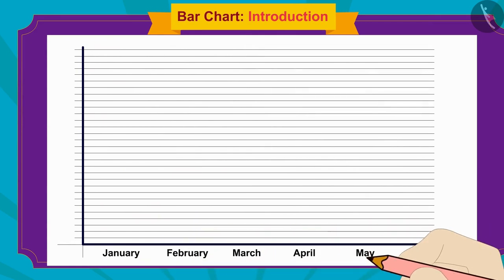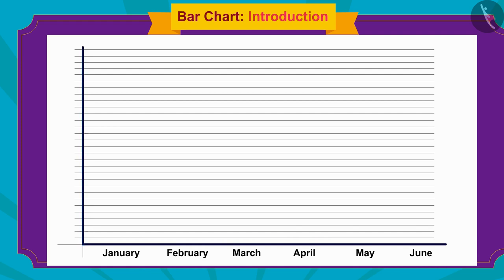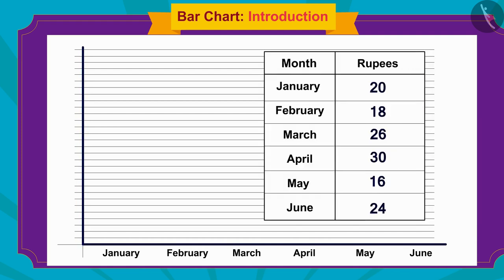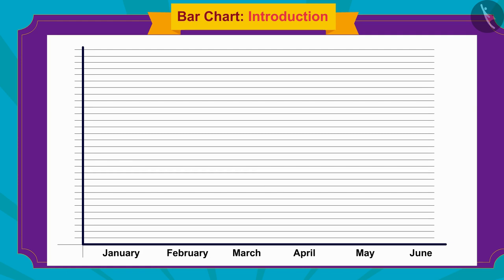Then he wrote the names of the six months on the horizontal line. In order to determine the interval between the numbers on the vertical line — the scale of the chart — he found the largest number in Bunny's table, which was 30. So he wrote down the numbers from 1 to 30, equally spaced, on the vertical line.